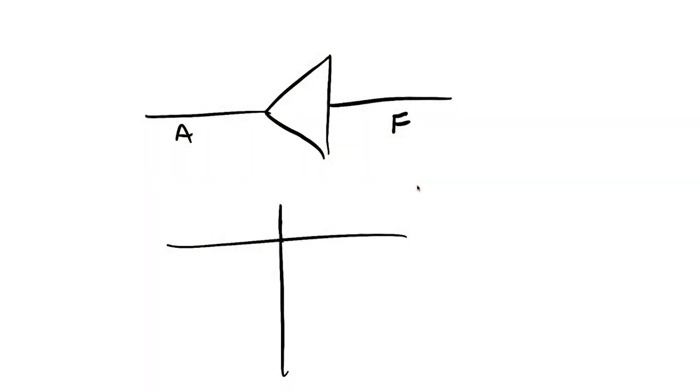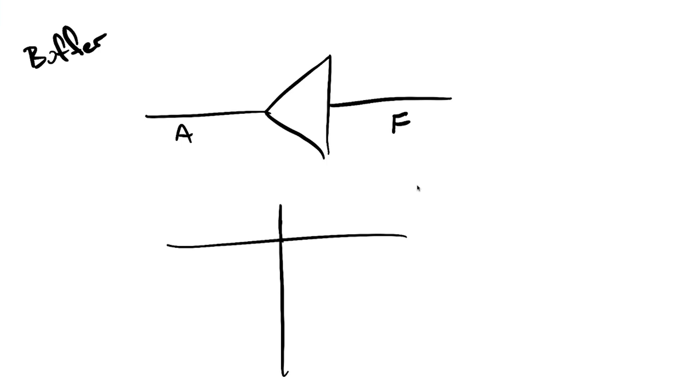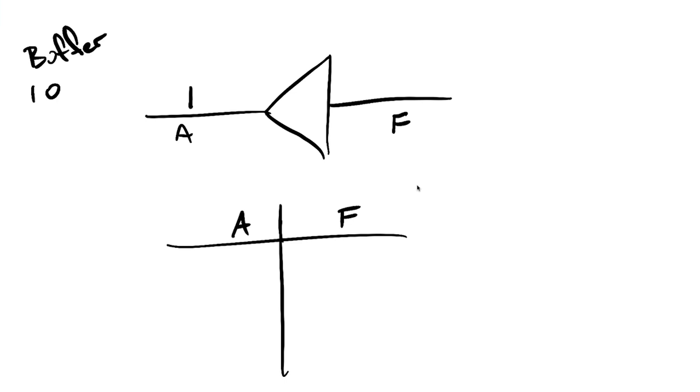The very most basic one you could have is called a buffer. The buffer is basically like a switch. We're dealing with binary so you have ones or zeros, on or off. When our input sees a one — our input is A, our output is F — whatever happens with one is going to happen to the output. With our truth table, an input of one gives me an output of one. Turn it on, it turns on; turn it off, it turns off.